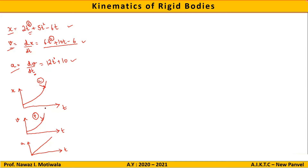One thing worth noting: when we go from displacement to velocity and from velocity to acceleration, the degree of the curves goes on decreasing. The degree of the displacement curve was 3, the velocity curve was 2, and the acceleration curve is 1. As we go down from displacement towards acceleration, the degree of the curve decreases.